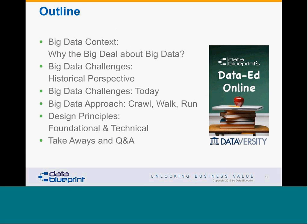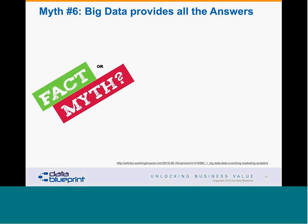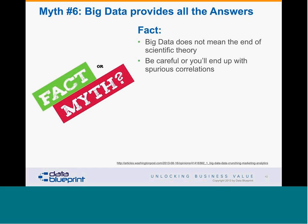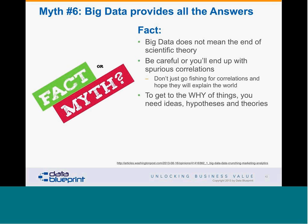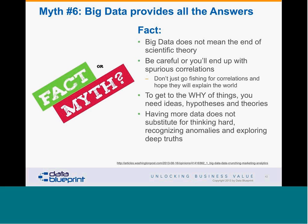Moving forward, let's talk about how to approach big data problems. Our advice is to crawl, walk, then run. Myth six: big data provides all the answers. In fact, it doesn't mean the end of scientific theory. More correlations require better understanding of statistics — just because you have a correlation does not mean you've identified causation. Don't go fishing for correlations hoping they'll explain the world. To understand motivation, you need hypotheses, theories, and stories. Having more data is not a substitute for good, careful analysis to recognize anomaly and explore deep truth.